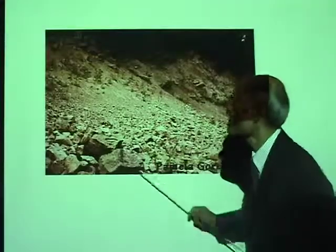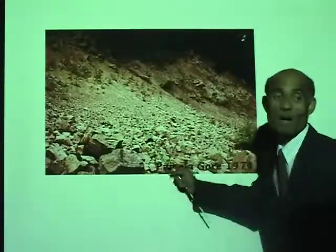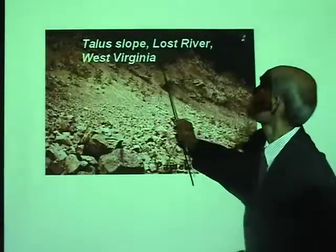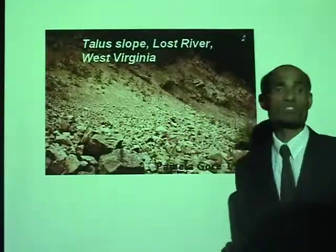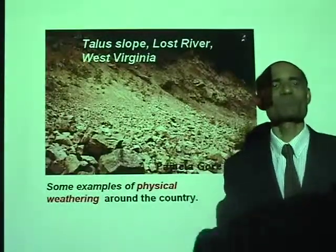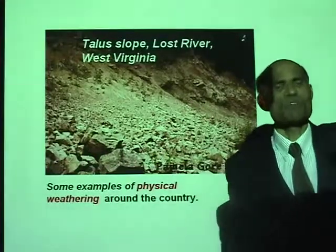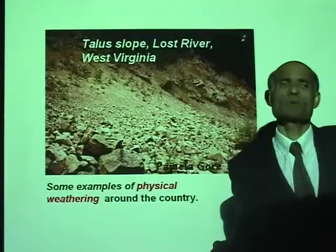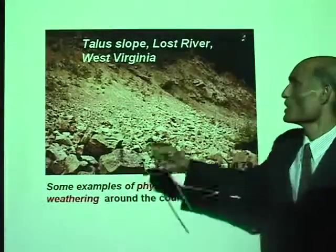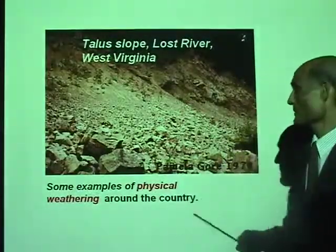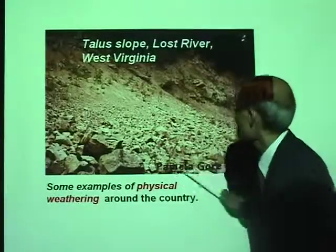Here are some examples of physical weathering — the breaking apart of rocks and minerals due to physical processes. This is the Talus slope, Lost River, West Virginia. West Virginia has some beautiful places of geological beauty, and if you drive through that area, all these geological changes are visible there.